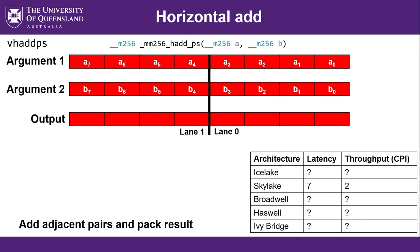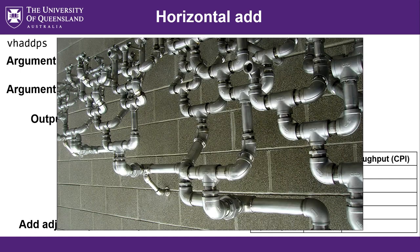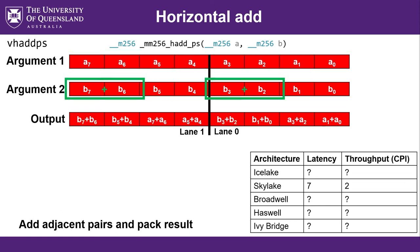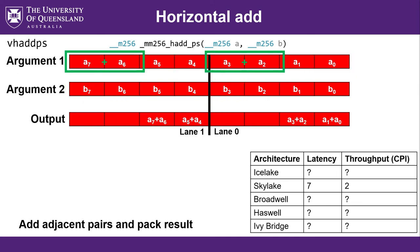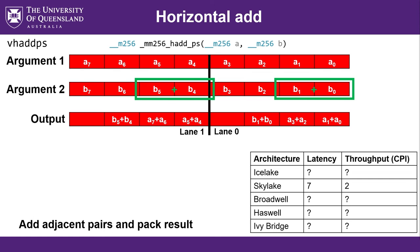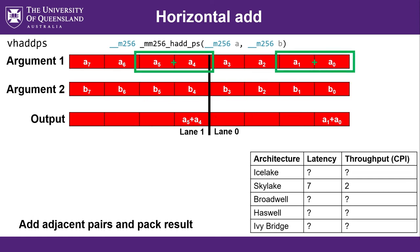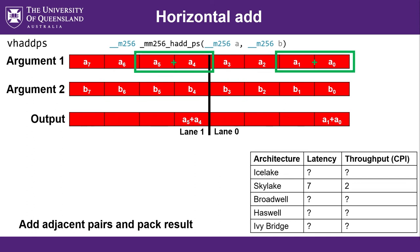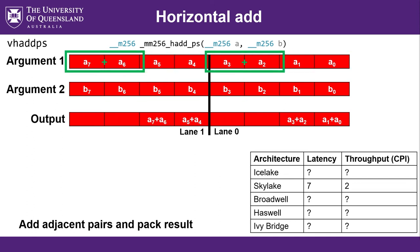There are also some operations that can work horizontally — instead of adding elements vertically (i.e., adding A[0] to B[0]), some can do operations between elements within the same vector. Horizontal add is an example and it's often handy. It works with a funny mapping: we add adjacent elements of A and put them in the output, add adjacent elements of B and put them in the output. You end up with an interlaced output: A[1]+A[0], A[3]+A[2], then B[1]+B[0], then B[3]+B[2] — two sums of A, then two sums of B, then two sums of A, then two sums of B.